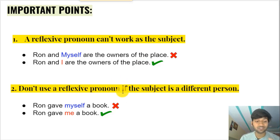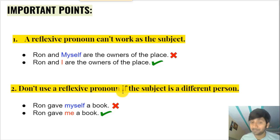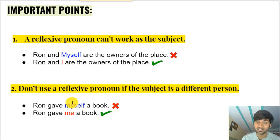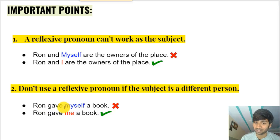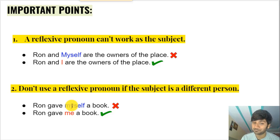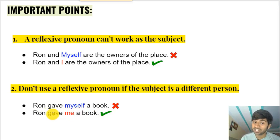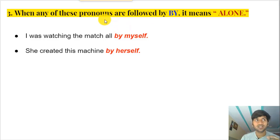Second: don't use a reflexive pronoun if the subject and the receiver of the action are two different people. For a reflexive pronoun to be used, both must be the same person. So saying 'Ron gave myself a book' is incorrect — Ron and I are different people. You must use an objective pronoun: 'Ron gave me a book.'